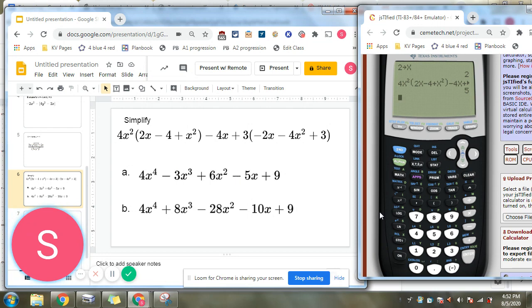So I'll do the first option to see what it gives me. 4x to the 4th power minus 3x to the 3rd power plus 6x squared minus 5x plus 9. And we did not get 5. That means that a is the wrong answer.